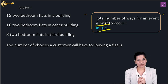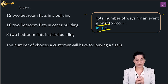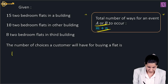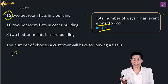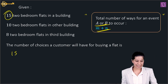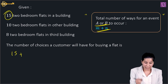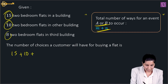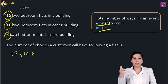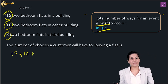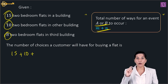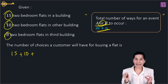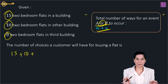Either I buy a flat in the first building — 15 choices — or in the second building — 10 choices — or in the third building. Because it's 'or', that's why we are adding, not multiplying.